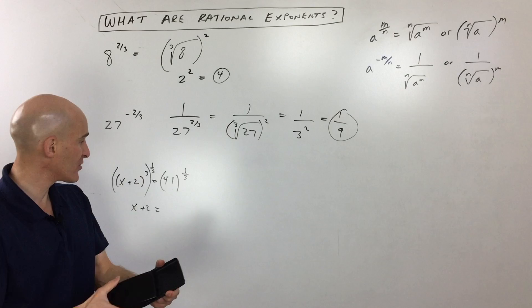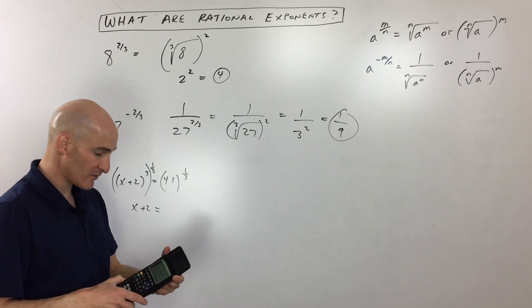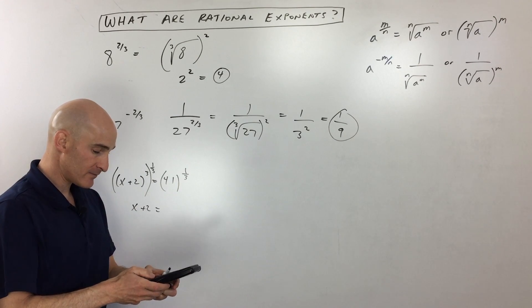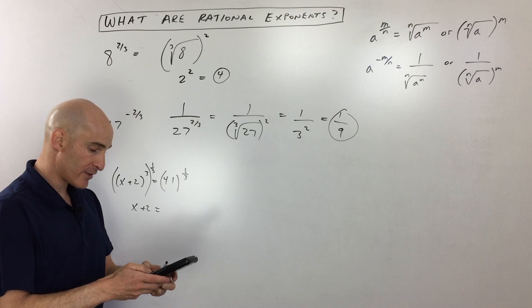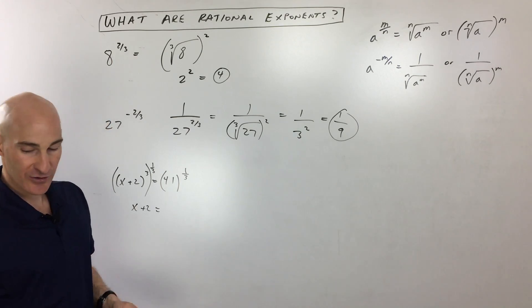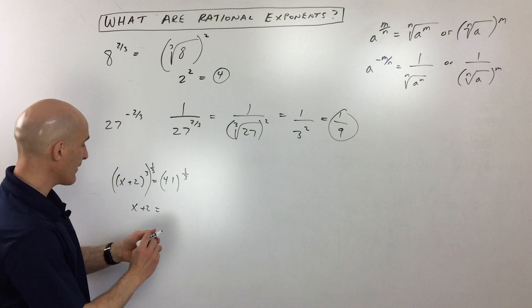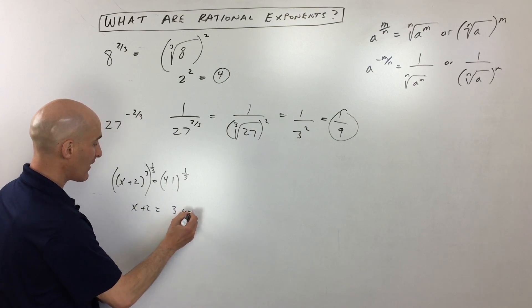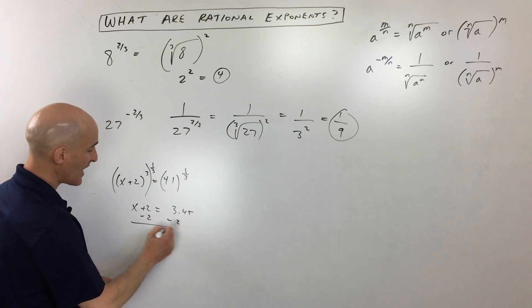Now, I'm going to use the calculator here and see what that comes out to. So we've got 41 raised to the 1/3 power, and that comes out to 3.45. So we'll just say 3.45. And then I'm going to subtract 2 from both sides, and you can see that x is coming out to 1.45.